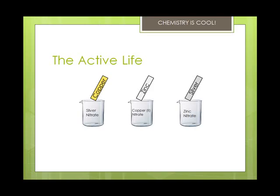Let's imagine you set up three experiments. In one, you're going to put a strip of copper into a solution of silver nitrate. In the second, you set a strip of zinc in a solution of copper 2 nitrate. And in the third, a strip of silver is placed in a solution of zinc nitrate. But only two of these three setups will result in reactions.